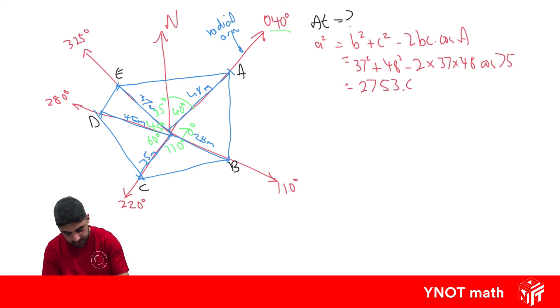Putting all that in the calculator is going to give us 2,753.67 for a². And to get a, we just need to square root both sides, and a is going to be 52.5 meters, correct to one decimal place.